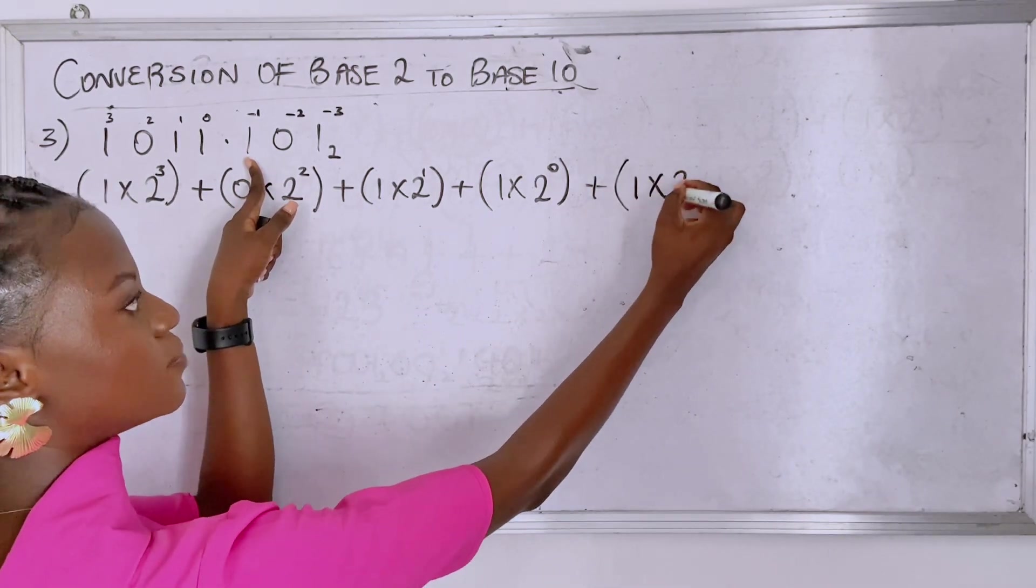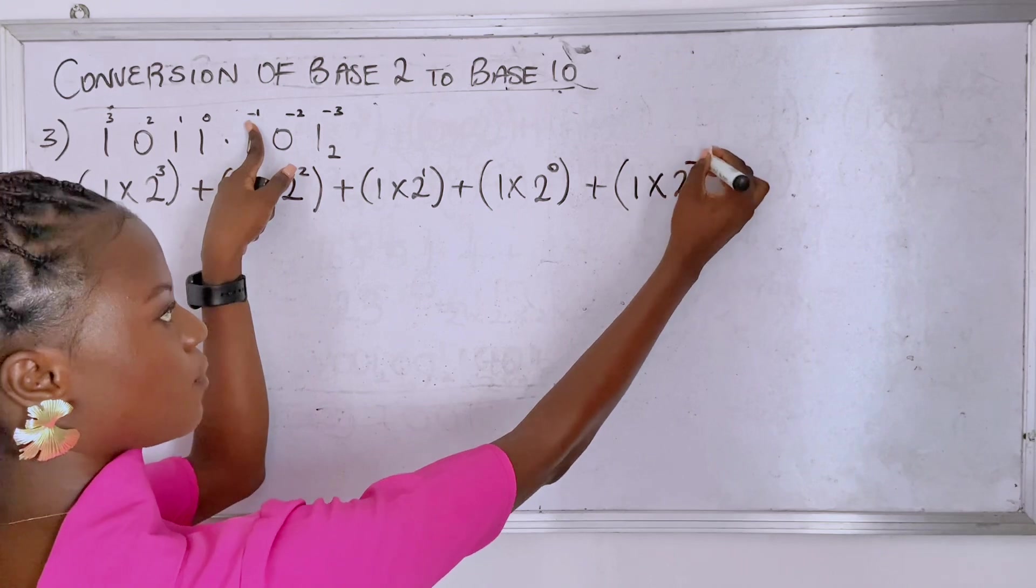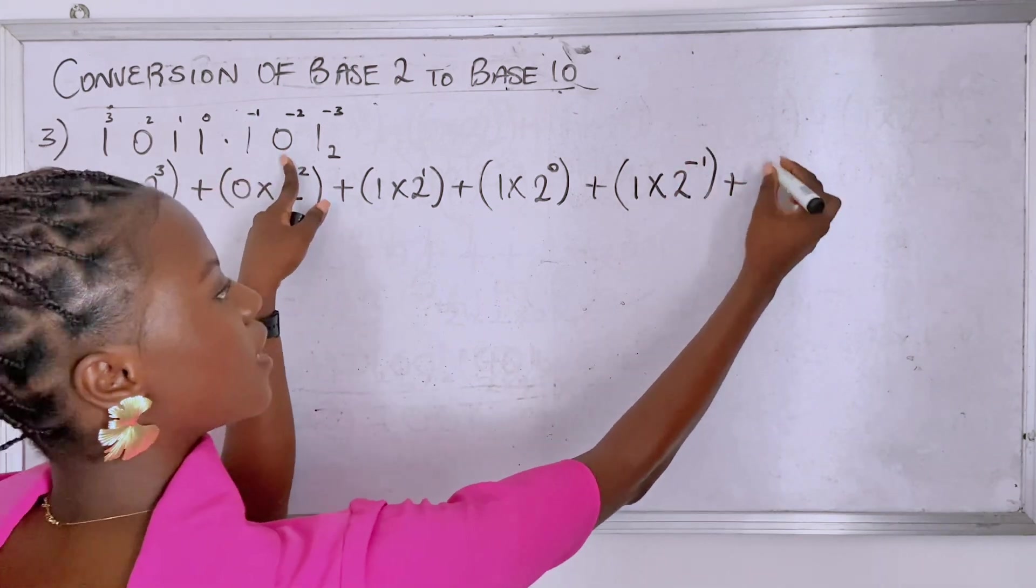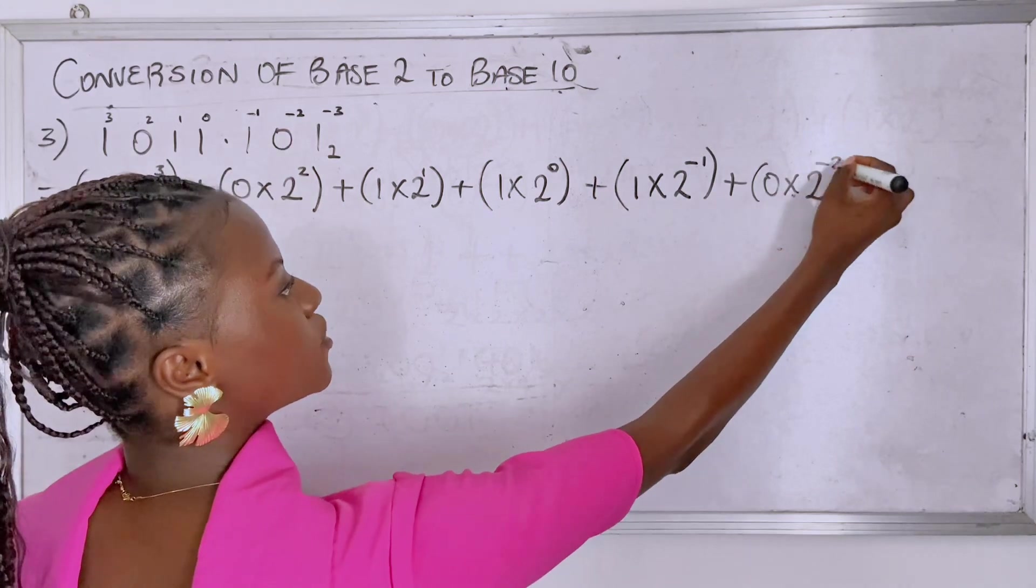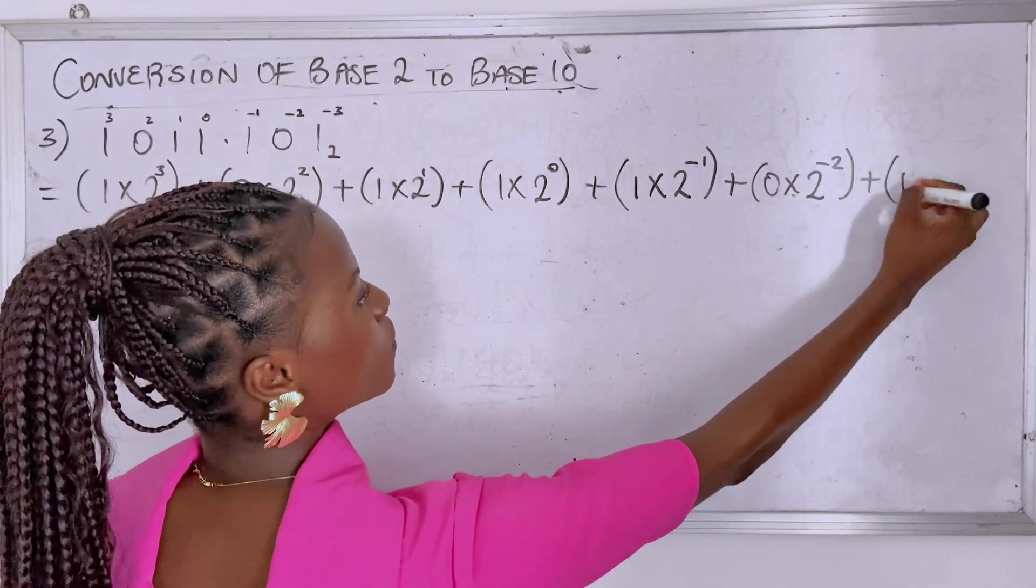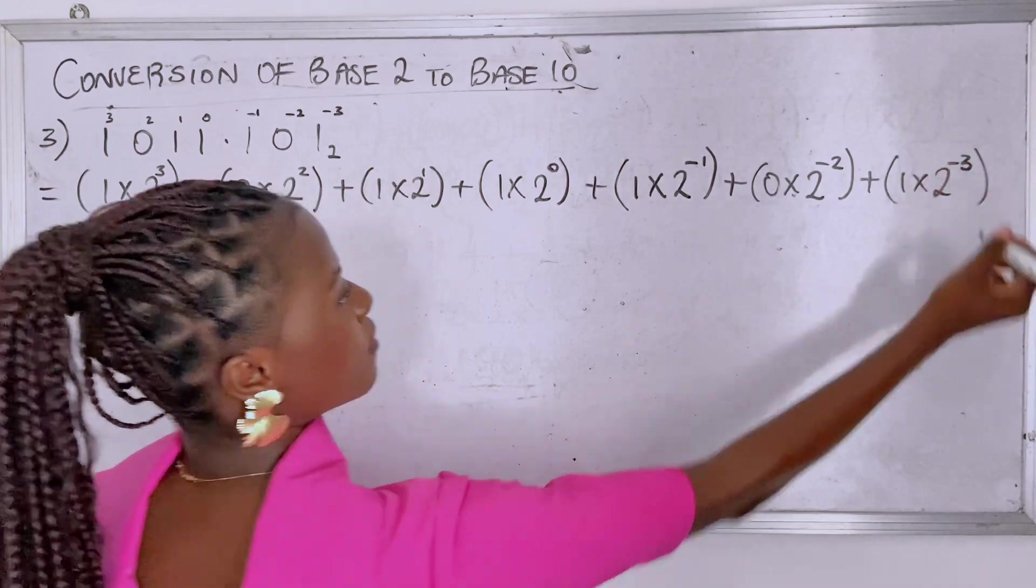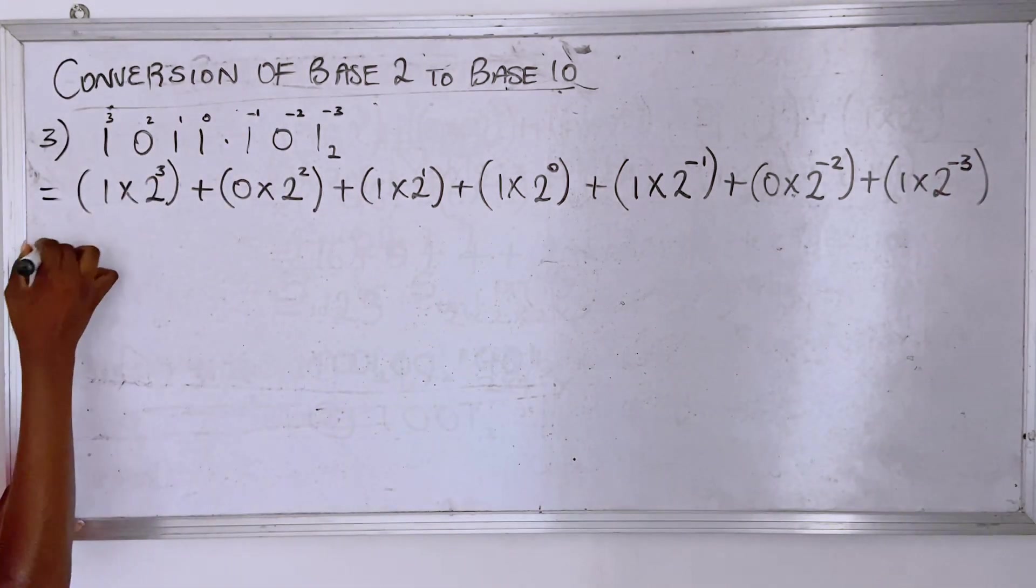Now for this part, just the same, you have one times its base raised to the power you have there, and then you have zero times the base raised to the power which is minus two.